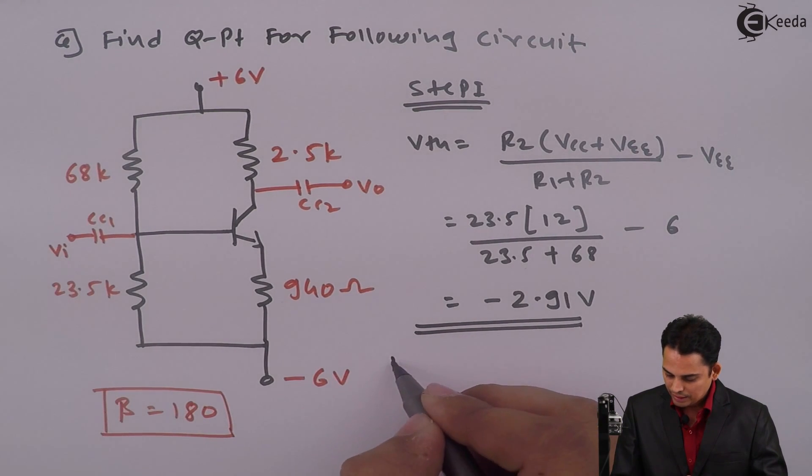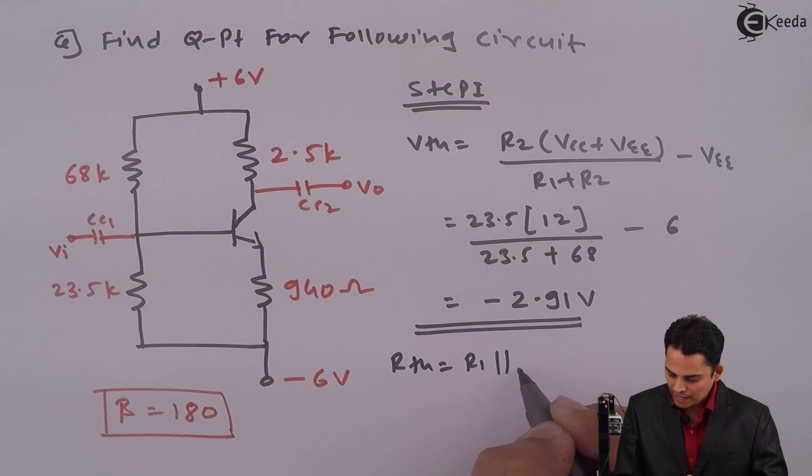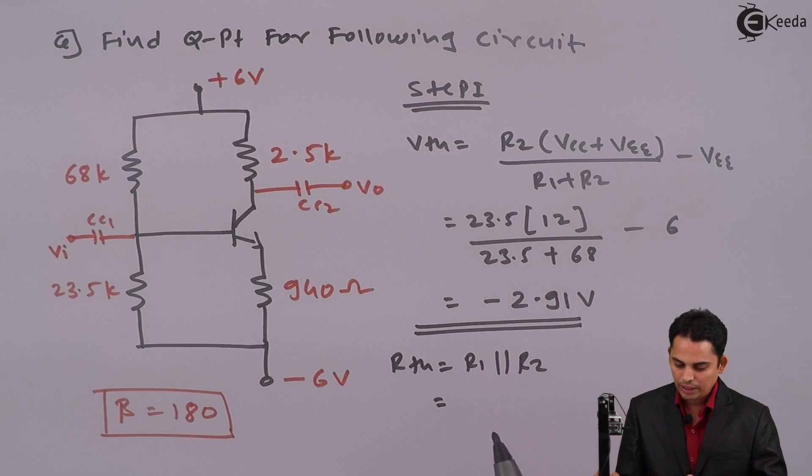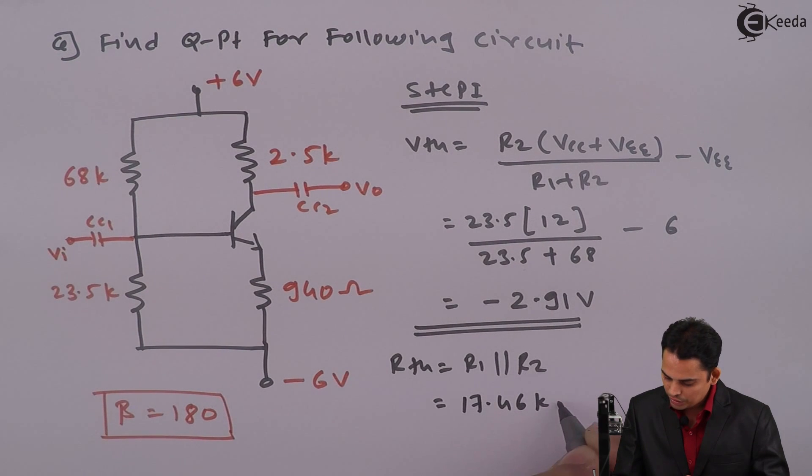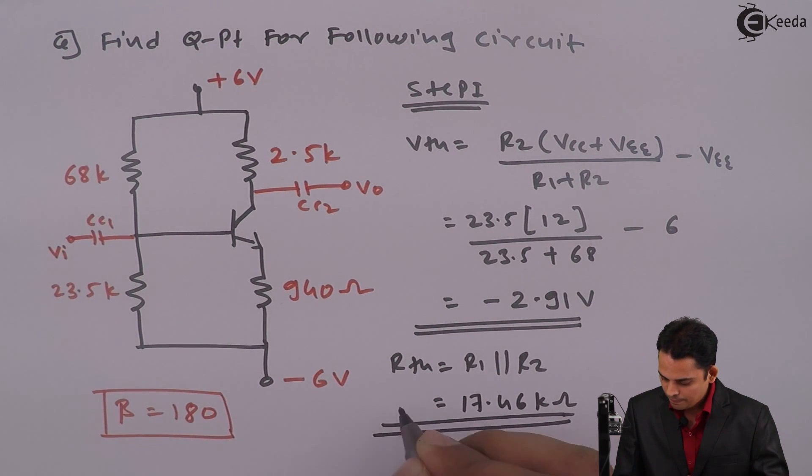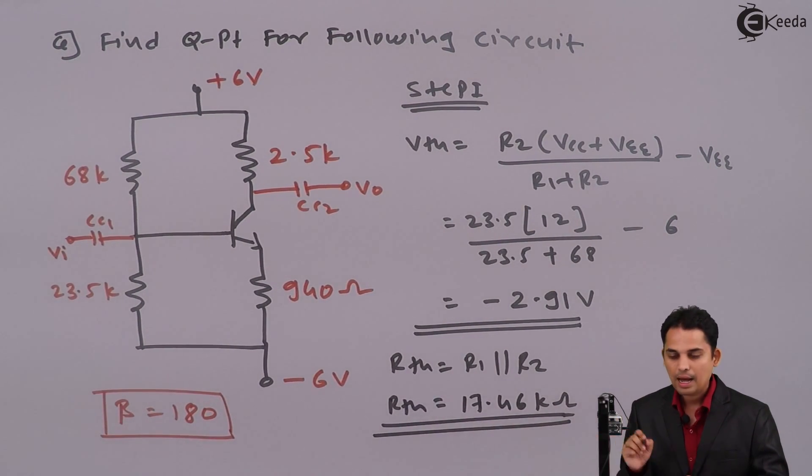RTH is given as R1 parallel R2 which is nothing but 68 kilo parallel with 23.5 kilo and value is equal to 17.46 kilo. This is the value of RTH.